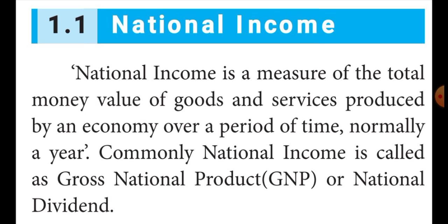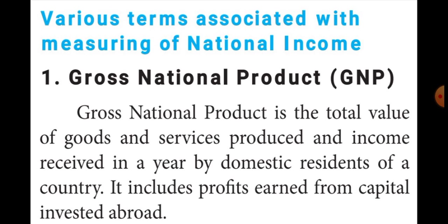What are the seven terms? The first one is gross national product, second is gross domestic product, third is net national product, fourth is net domestic product, fifth is per capita income, sixth is personal income, and the last one is disposable income. The first one — gross national product — is the total value produced in a particular country; that production income is counted in the gross national product.